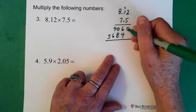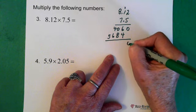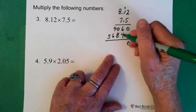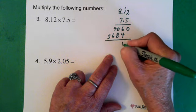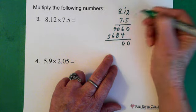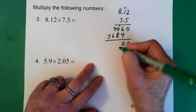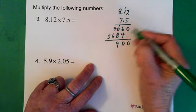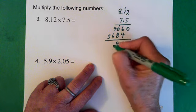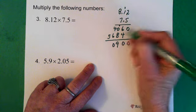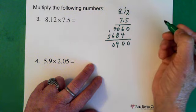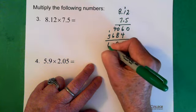So now we add these up. Here we have a 0. 6 and 4 is 10. 0 goes down here. The 1 goes up here above the 0. This is a 9. 6 and 4 is 10. So the 0 goes down here. The 1 goes above the 5. And we end up with a 6 here.